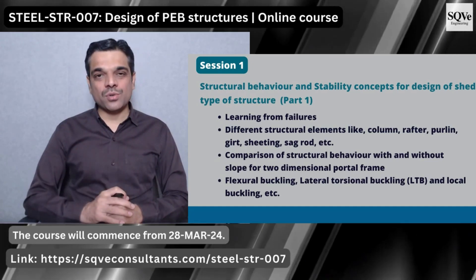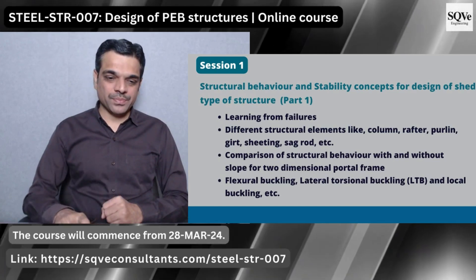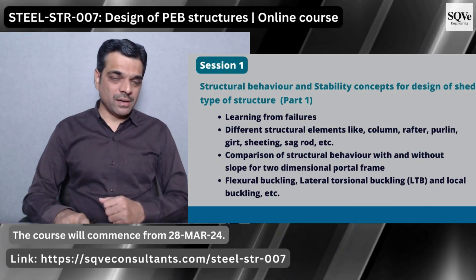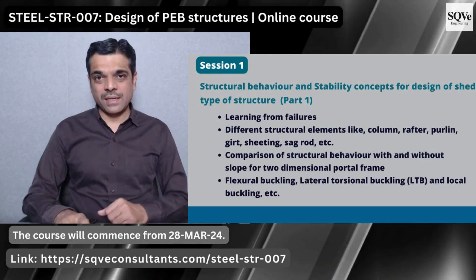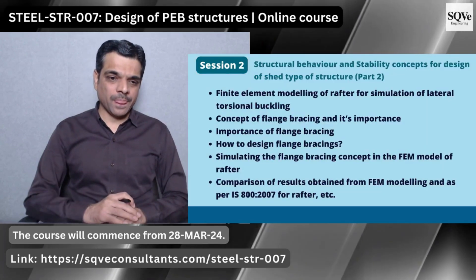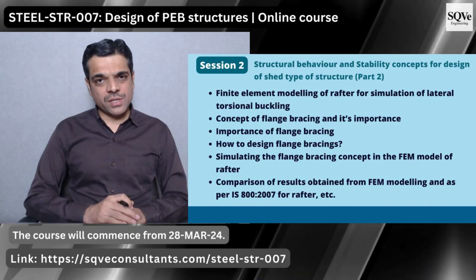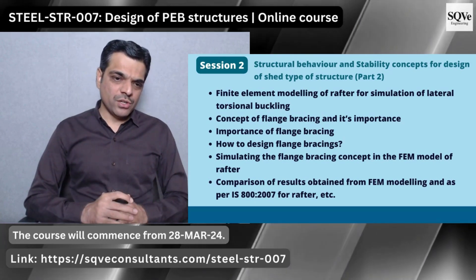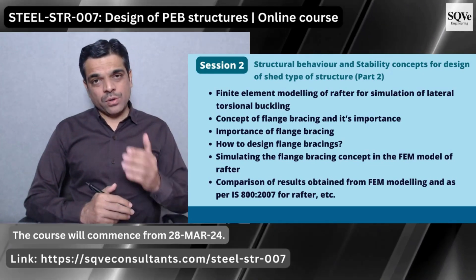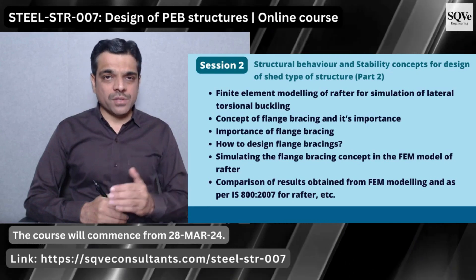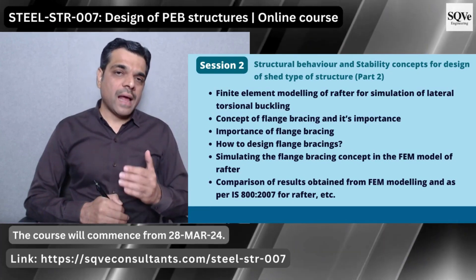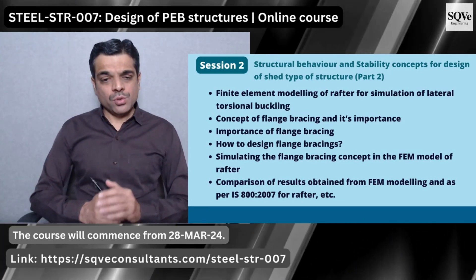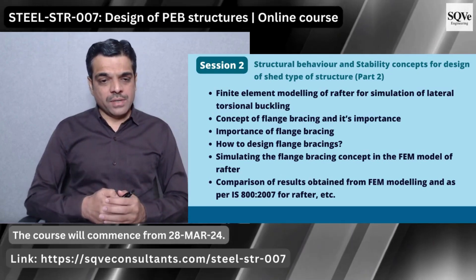We will do a comparison of structural behavior — first with and without slope — to understand what happens in the structure due to the introduction of slope. We'll talk about important limit states like flexural buckling, lateral torsional buckling, and local buckling. We will generate a finite element model of the rafter to simulate lateral torsional buckling, and that's where we will talk about the concept of flange bracing — why flange bracing is introduced, what will happen if we do not introduce flange bracing, and how to design the flange bracing.